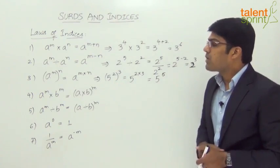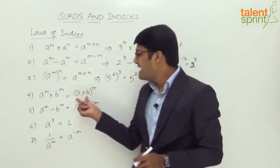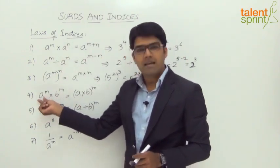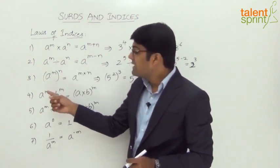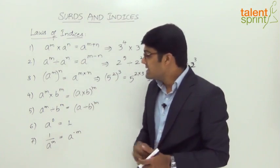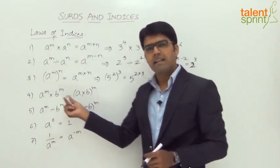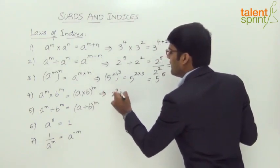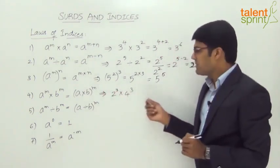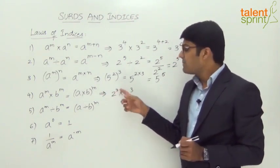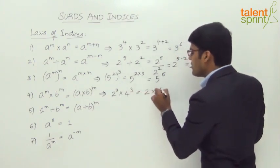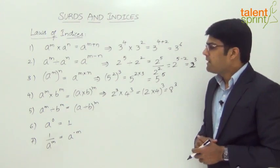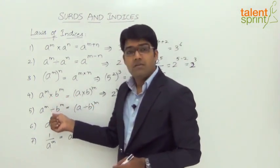The fourth rule: a to the power of m multiplied by b to the power of m equals (a multiplied by b) whole to the power of m. Here the bases are different — a and b — but the powers are equal. Since there is a multiplication symbol, the bases can be directly multiplied. For example, 2 cubed into 4 cubed — different bases, same power — gives (2 times 4) cubed, which is 8 cubed, equal to 512.